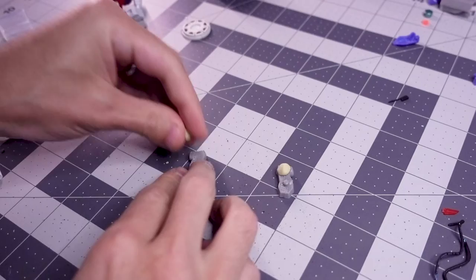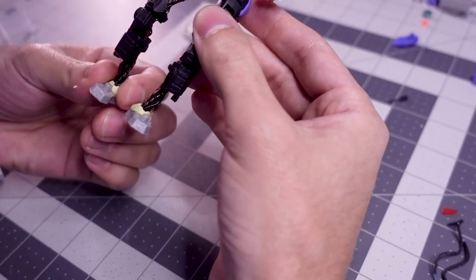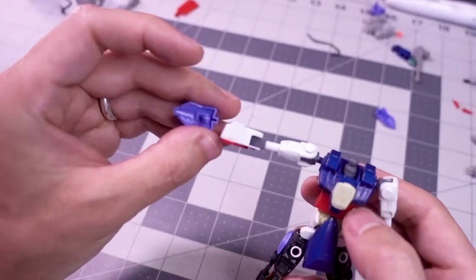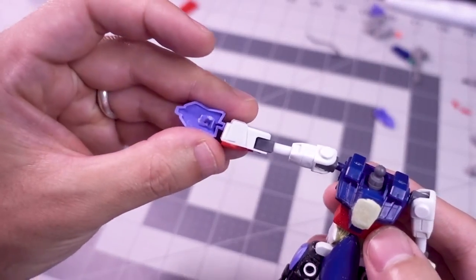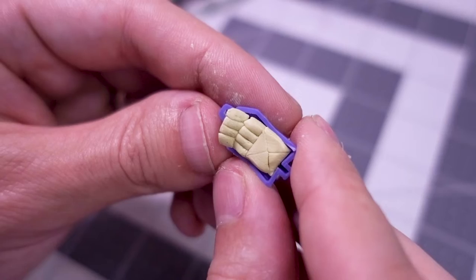I next attached the base of the leg wires to the soles of the feet with a bit more Milliput. I used these shoulder armor pieces, I think, for the backs of the droid's hands, then sculpted Milliput for the fingers.